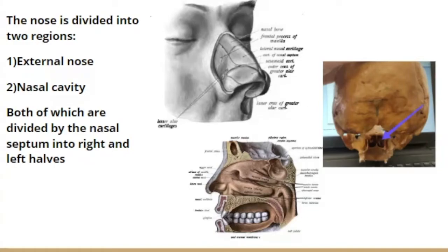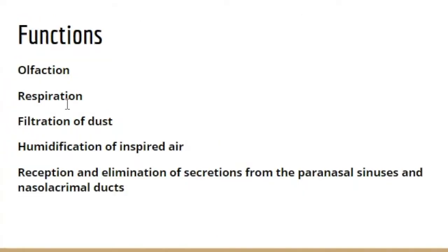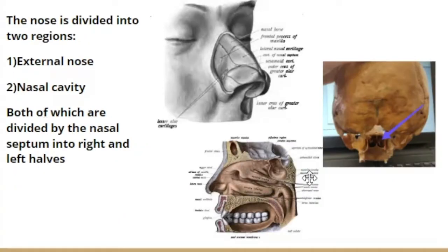Starting with the anatomy of the nose, the first thing I want to remind you are the five functions it performs: olfaction, which is the perception of smell; respiration; filtration and humidification of the inspired air; as well as reception and elimination of secretions from the paranasal sinuses and the nasolacrimal ducts. The anatomy of the nose can be visualized keeping these five functions in mind.